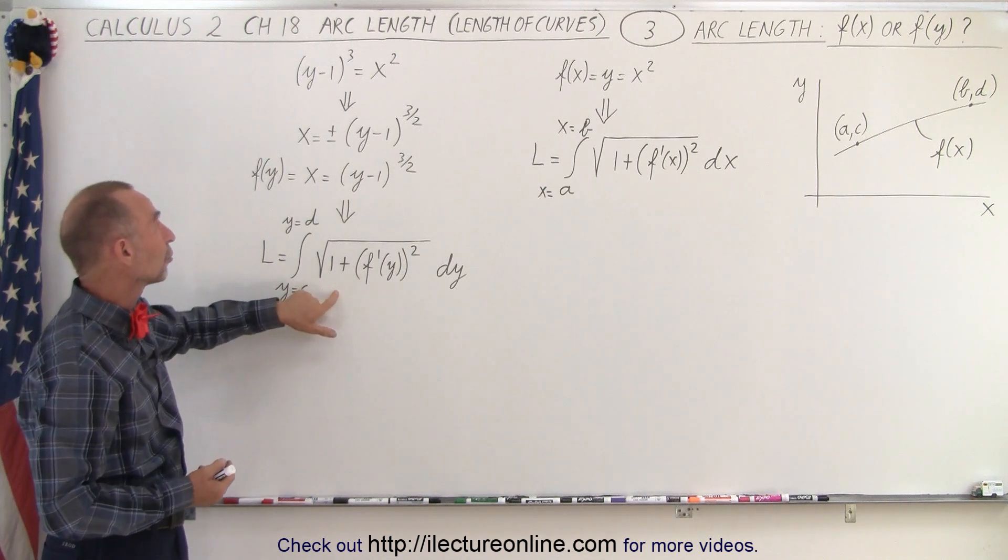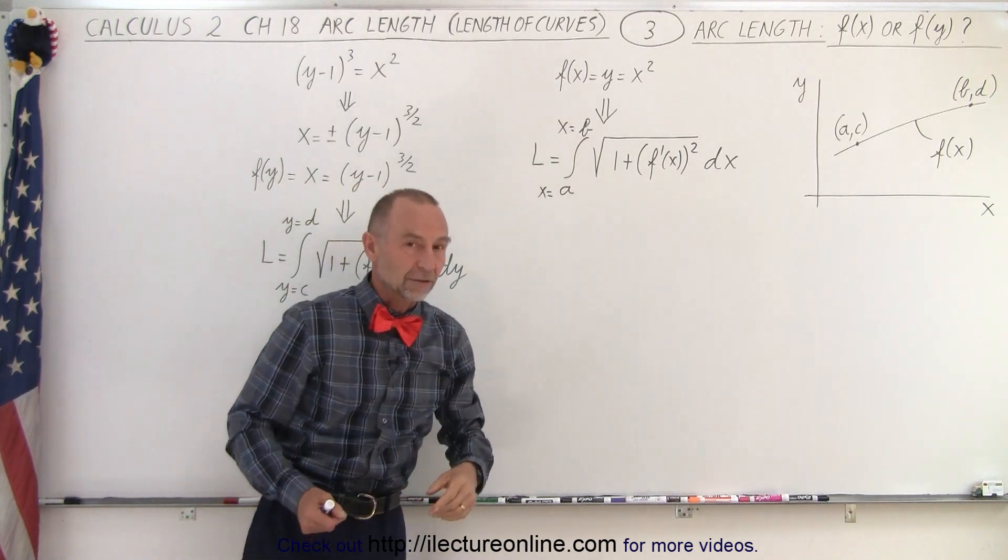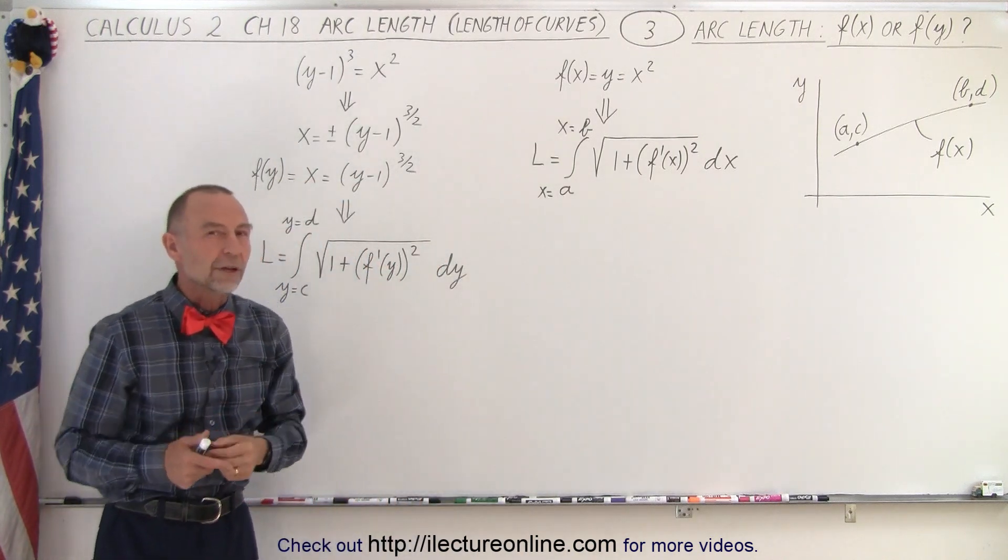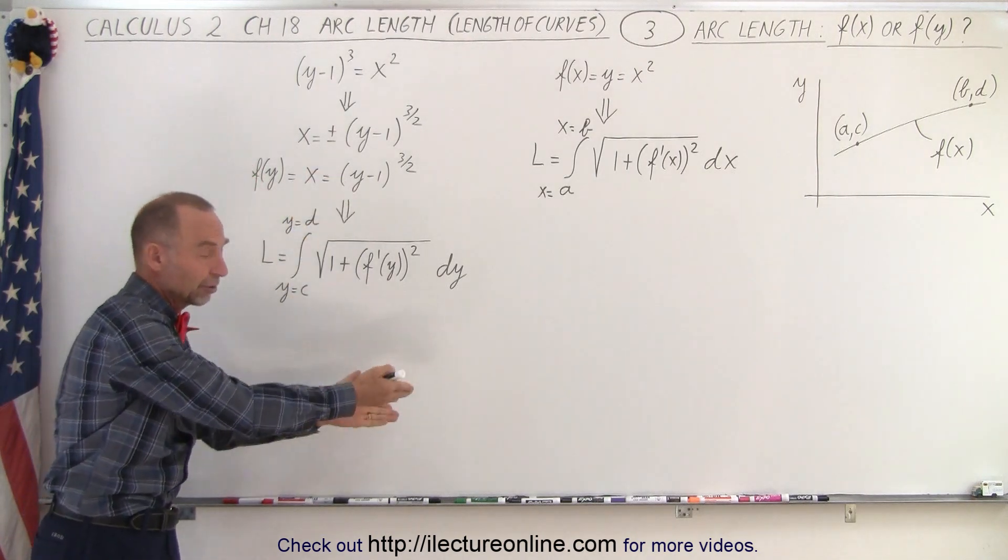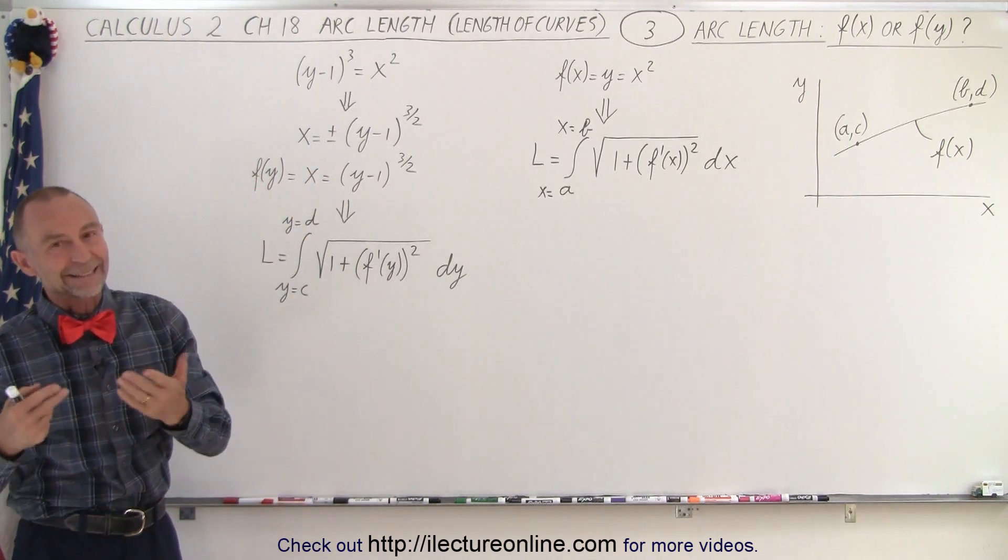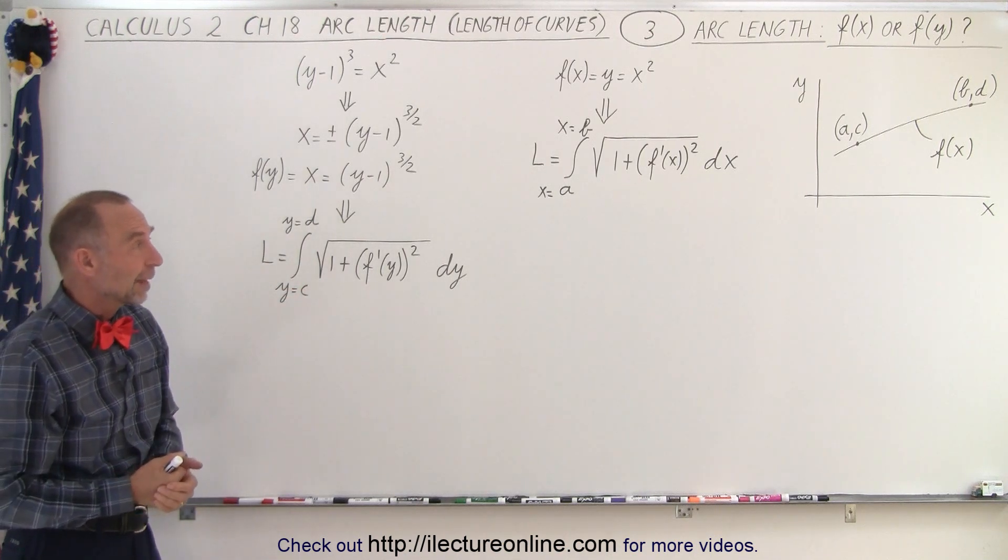So sometimes you want to write in terms of the function of y like we did over here instead of using a function of x. Turns out that we'll show you an example where we take the very same function and we solve it both ways, and of course we would expect to get the exact same answer for the exact same arc length. And it does. It does give you the same answer.